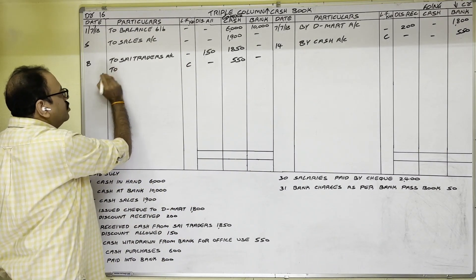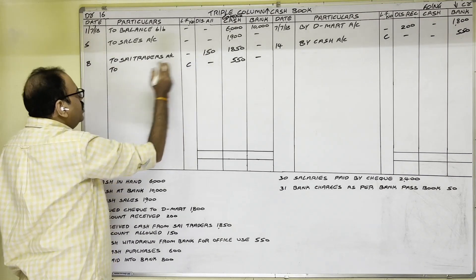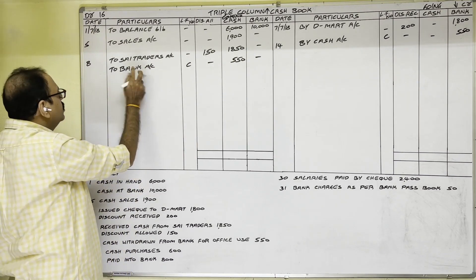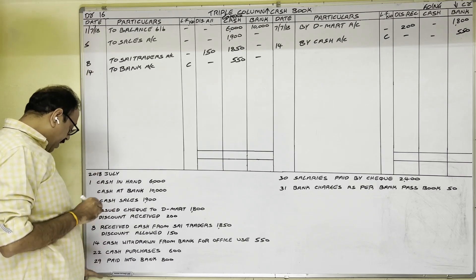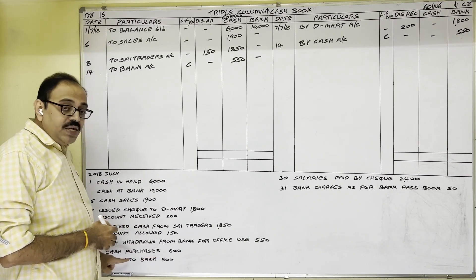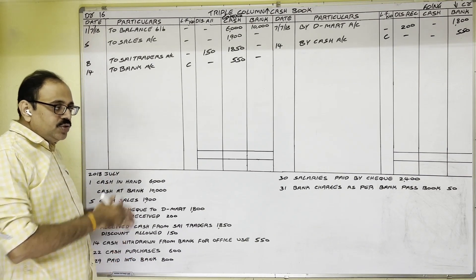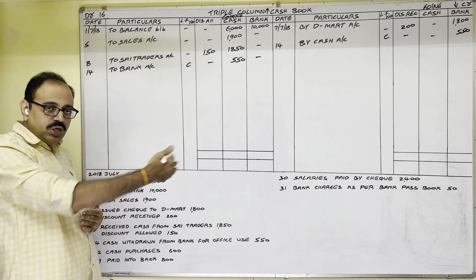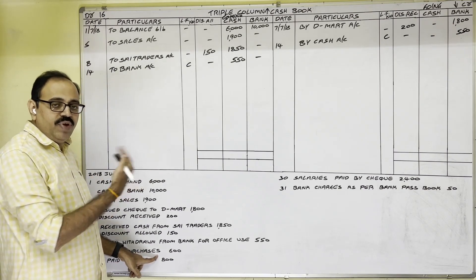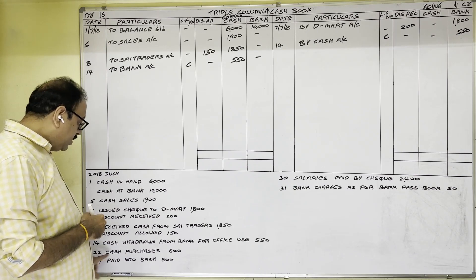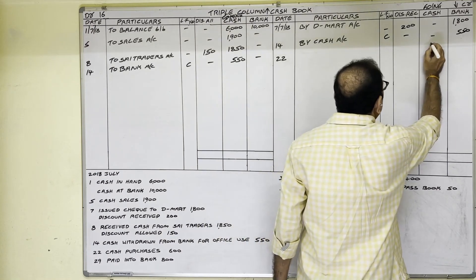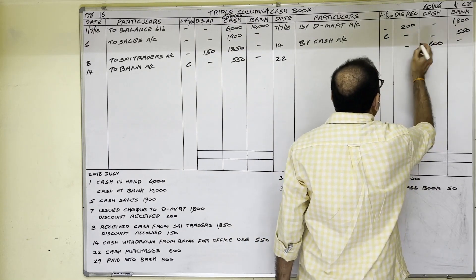22nd date: cash purchases 600 rupees. We purchased goods from a supplier for cash. Goods are coming in; in return we paid cash to the supplier — cash is going out, so credit side cash column, 22nd date, 600 rupees. When goods are purchased, in particulars we write purchases account.